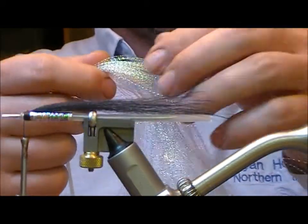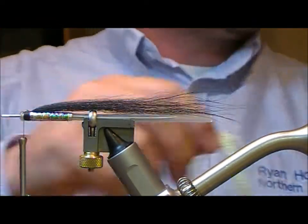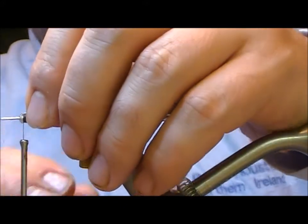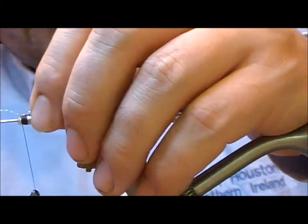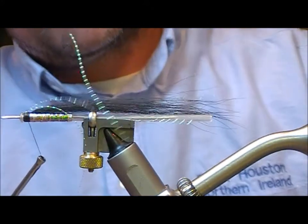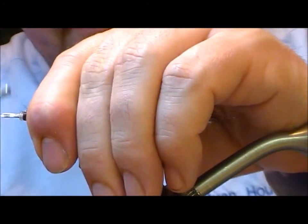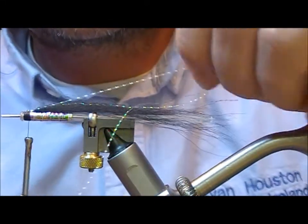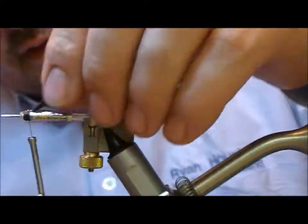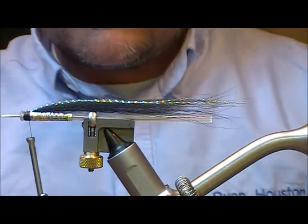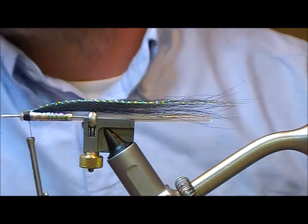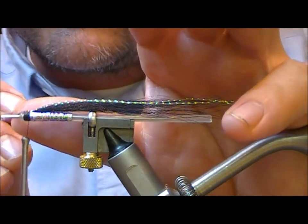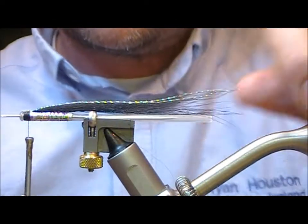Next I'm going to put on a little bit of pearl crystal hair. I'll take one strand of it. I'll place it on roughly the length of the under wing that I have here, and then double it back on itself. Just make sure that's up on top, and then cut the two strands off the same length. Now I want to take a little bit of super glue and just secure in that tie-in point.